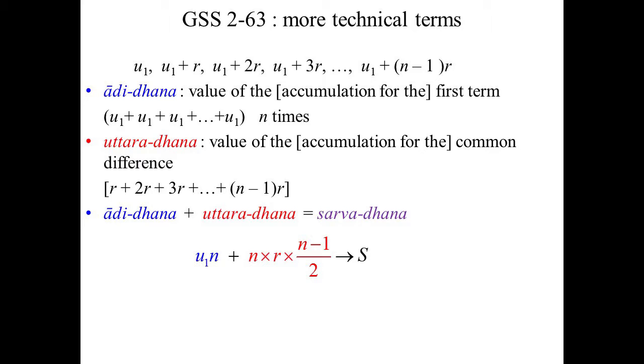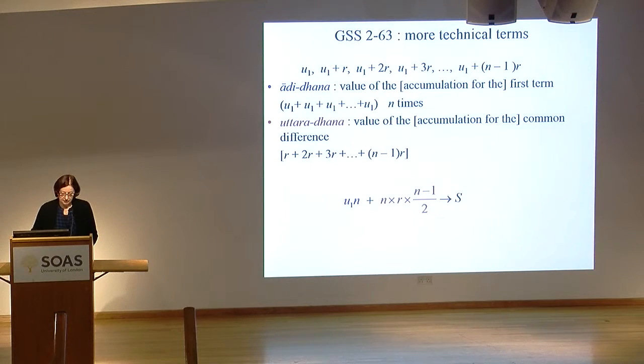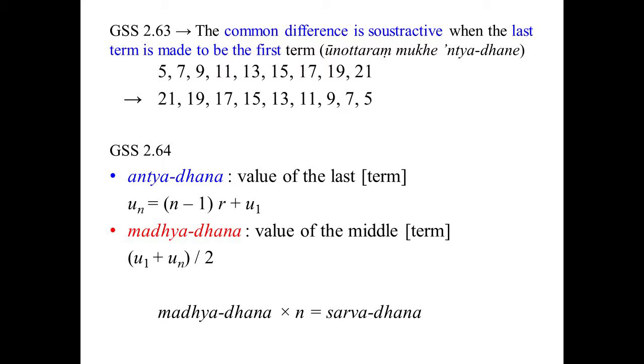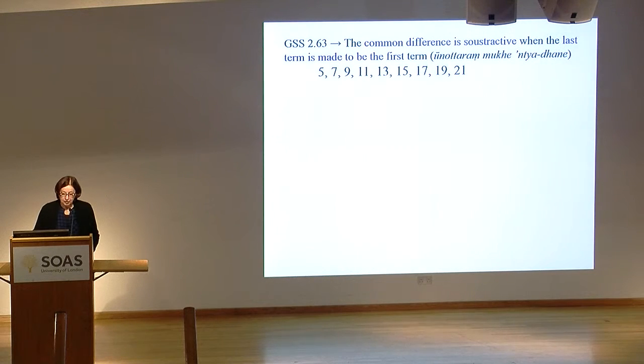Some more technical terms, very specific and, to my knowledge, not used in any other mathematical text. These terms are adi dhana and uttara dhana. Adi dhana is not the value of the first term only — it's the value of the accumulation of the first term, so it's u₁ times n. And uttara dhana is the value of the accumulation of the common difference. Mahaviracharya is also the only author to suggest that if one changes the order of the terms, the total will be the same.